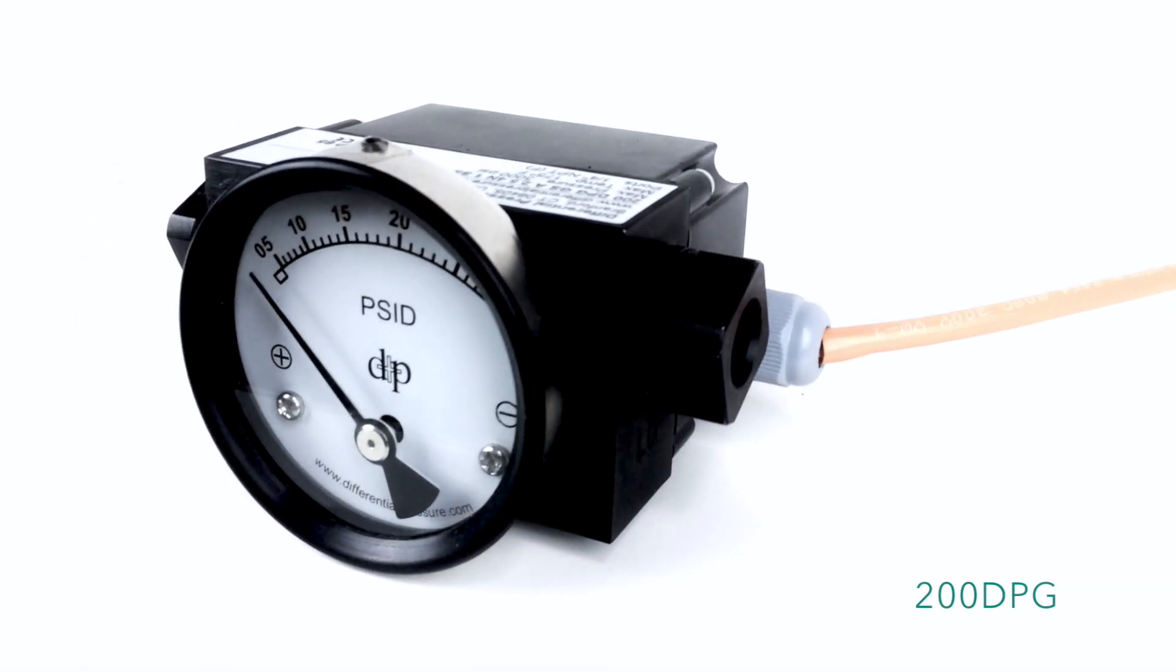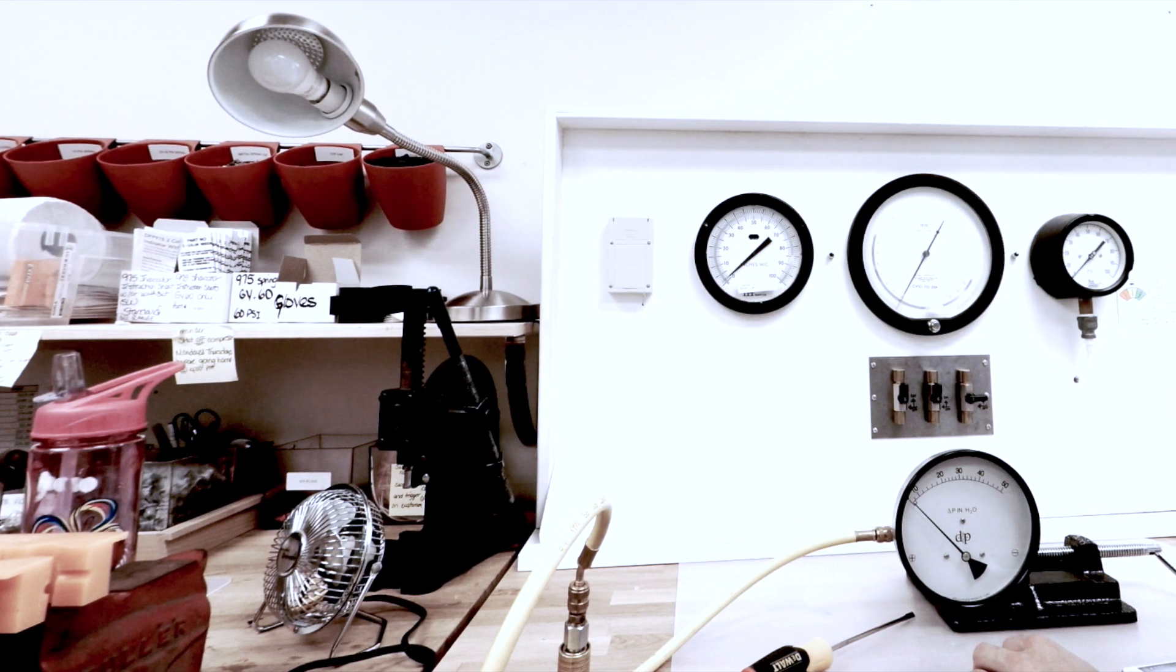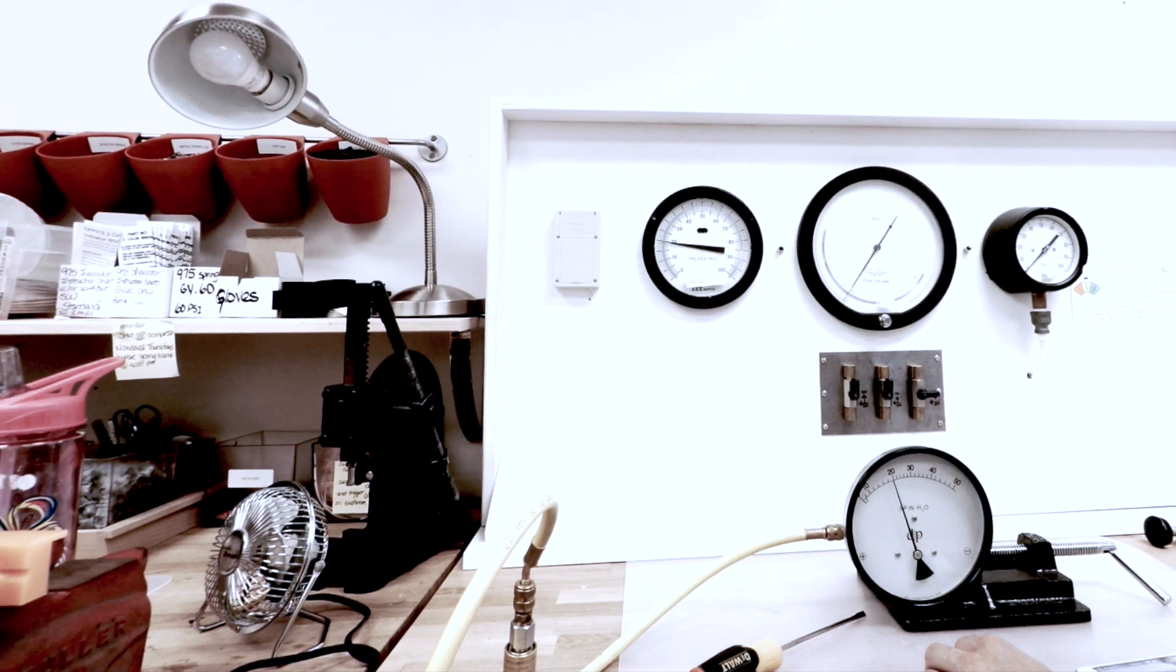The 200 DPG has a maximum system pressure of 6000 psi, has Teflon seals, and has a range from 3.5 to 1000 psi.